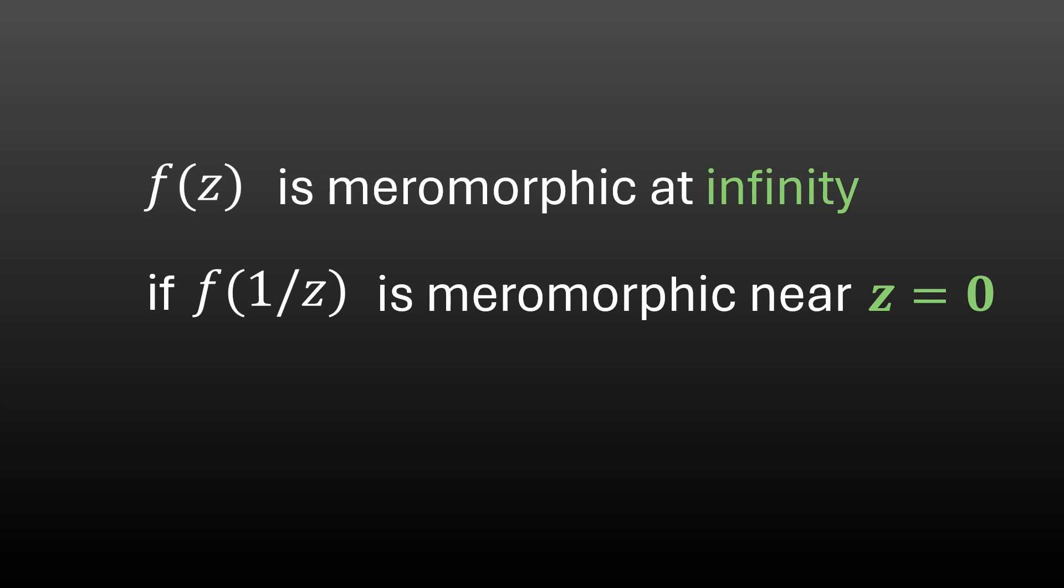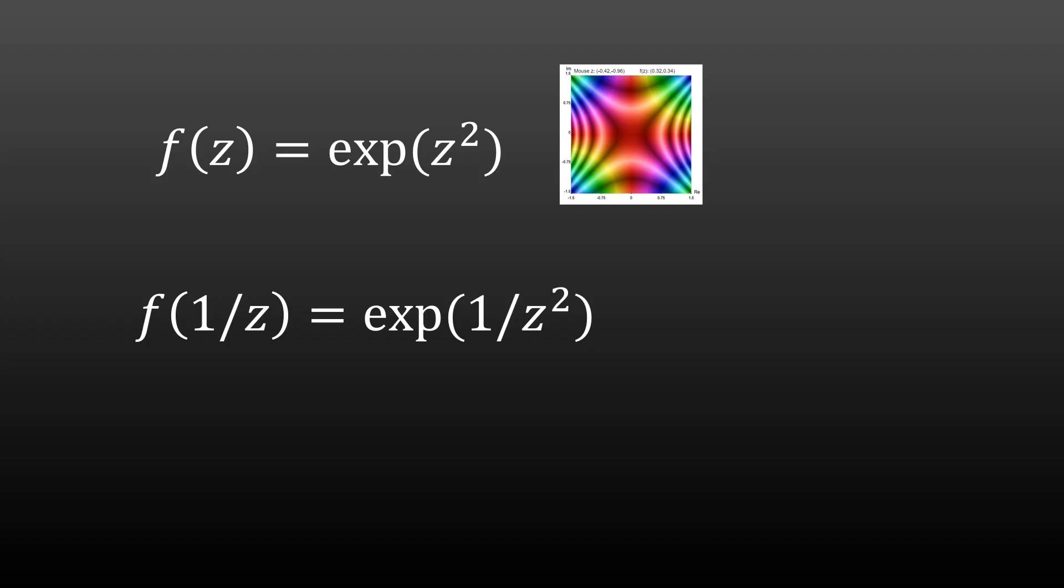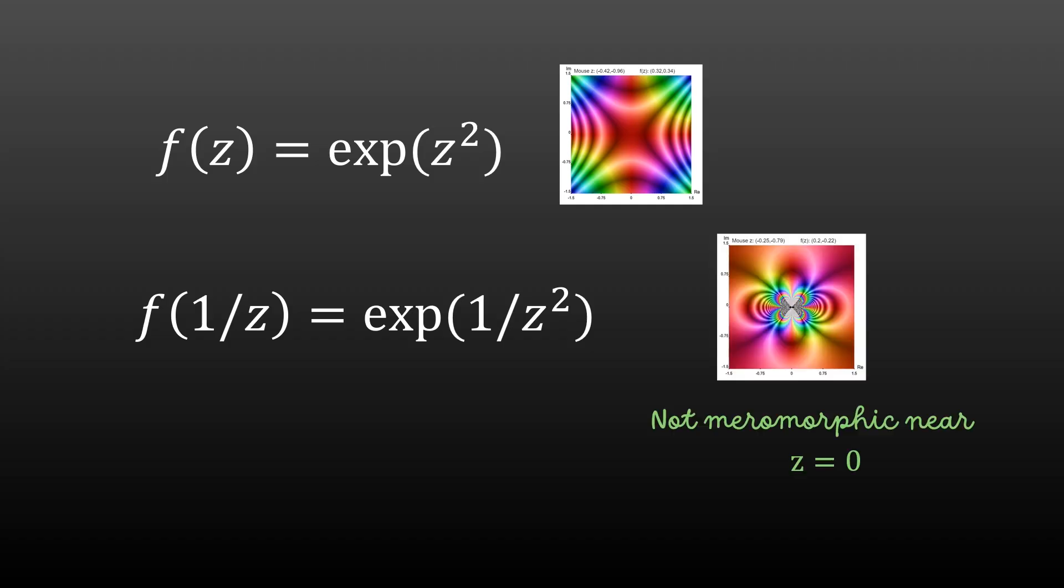An example should clarify. Consider the function f of z equals exp of z squared. It looks like this. Let's calculate f of 1 over z, so this equals exp of 1 over z squared, which looks like this. As we saw earlier, this is not meromorphic near z equals 0, because it has an essential singularity. So the original function is not meromorphic at infinity.